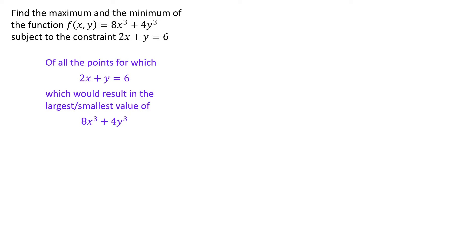what they're really saying is, of all the points for which 2x plus y equals 6, of which there are infinitely many, of course, which of these would result in the largest and smallest value of the function that we're trying to optimize? This is the goal that we're trying to achieve.